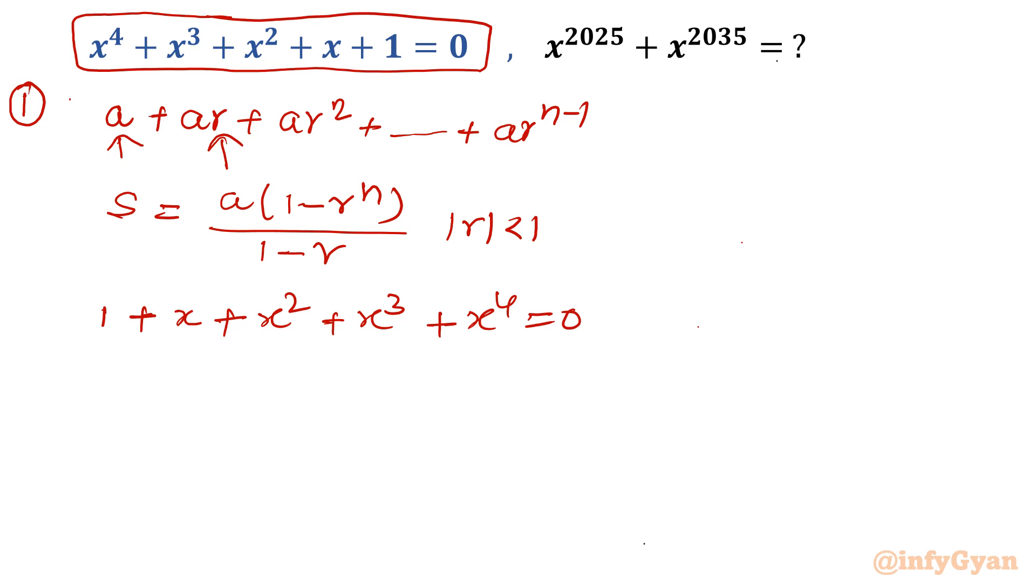Where first term is 1, common ratio is x. Total number of terms: the powers are 0, 1, 2, 3, 4 and 1, so total number of terms is 5. Now let us find out the sum. I will write s is equal to first term, so 1, times 1 minus common ratio x whole power 5 over 1 minus x, and 1 minus common ratio equal to 0 given.